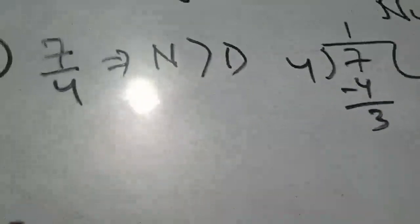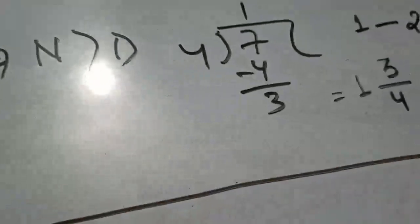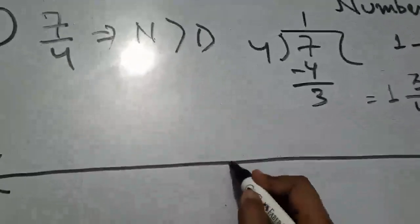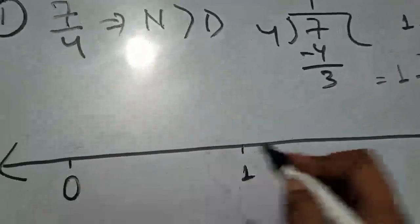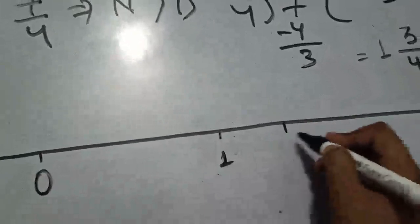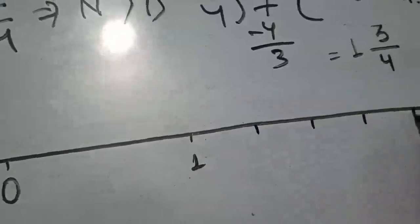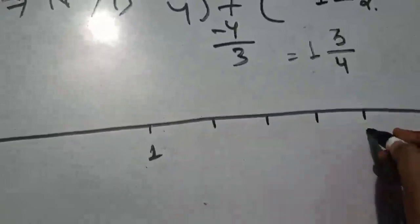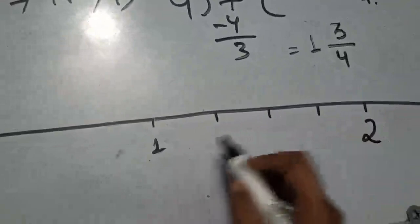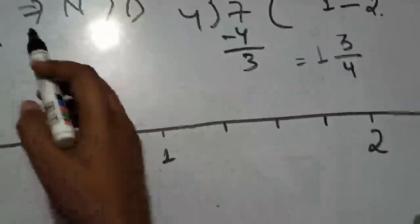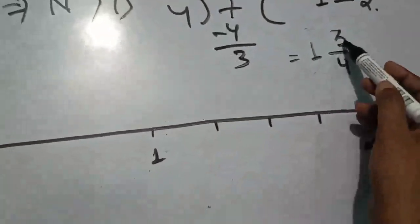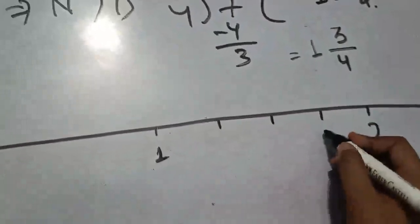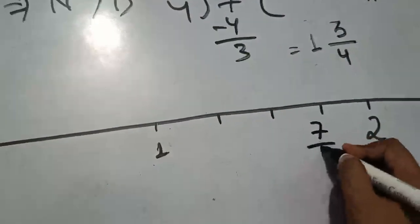Ab jaldi se number line banate hain. 4 parts mein divide karna padega — 1, 2, 3, 4 — tab yahan 2 aayega. 1 aur 2 ke beech mein lie kar raha hai. Ab kitne hisse aage badhne hain — 3: 1, 2, 3. To yahan aapka 7 by 4 lie karega. Bahut easy hai agar aap ise practice mein laate hain.